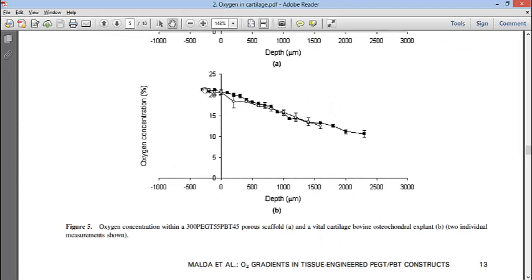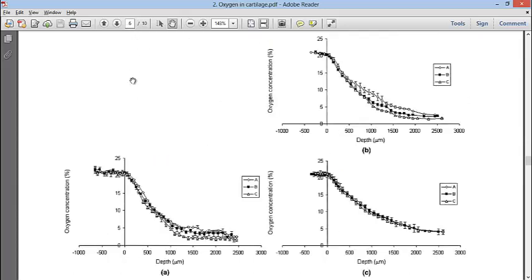Then here, they made a porous scaffold with cells, and there was an obvious oxygen concentration gradient. So they found that.